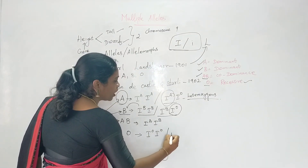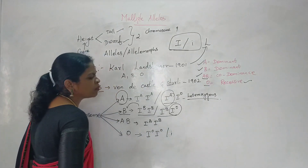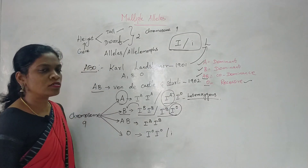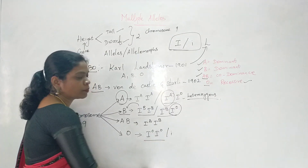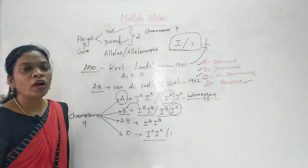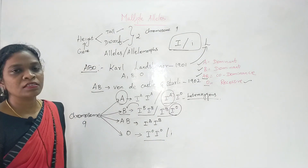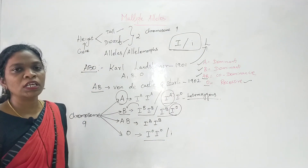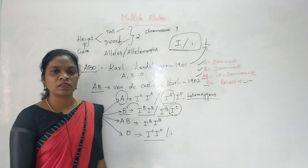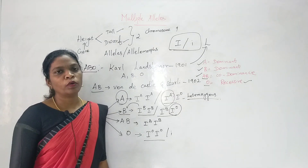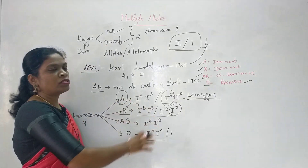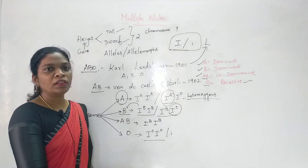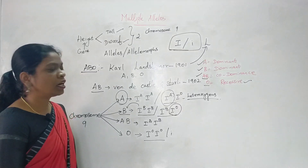For blood group O, the genotype is i^o i^o — double recessive — and the blood group expressed is O.